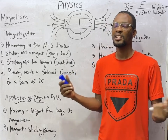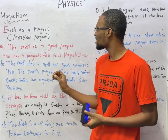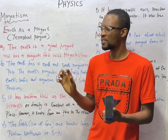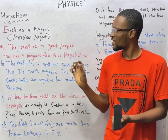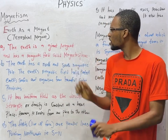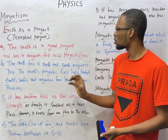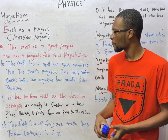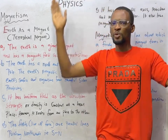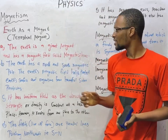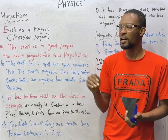The earth is a giant magnet and it has a magnetic field called the magnetosphere. Just like other magnets, the earth has south and north magnetic poles. The earth's magnetic field serves two main purposes: it protects the earth's surface and its organisms from harmful solar particles.